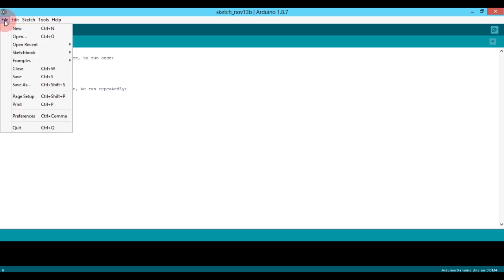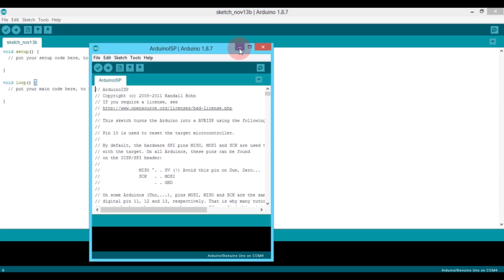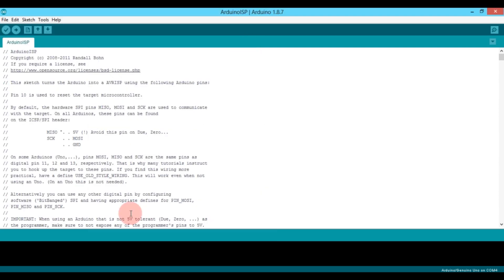Then go to File, Examples, and select Arduino ISP. Click on compile to compile your sketch. Once the compiling is done, click on the upload button to upload your ISP to your Arduino Uno.